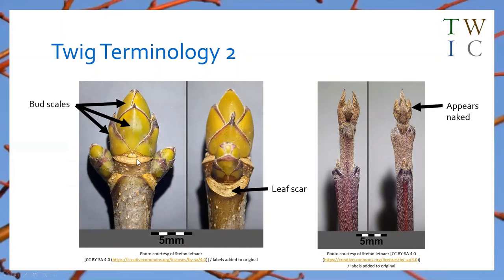The developing bud is protected by a number of modified leaves called bud scales. Most trees have these scales — the number varies, the colour varies — and they protect the developing bud from drying out and from damage. There are a few species where these scales appear lacking; in those cases the developing leaf is just folded up with nothing covering it, and we refer to these as naked buds.